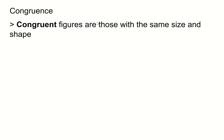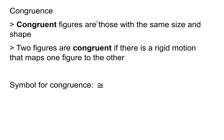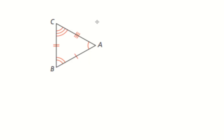Congruent figures are those with the same size and shape. Two figures are congruent if there is a rigid motion that takes the pre-image and converts it to the image. If you're comparing two figures and want to determine if they're congruent, you could identify whether there is a rigid motion — some kind of reflection, translation, etc. — that will take one shape and give you the other one. The symbol for congruence is the equal sign with a tilde on top. A rigid motion is sometimes called a congruence transformation.